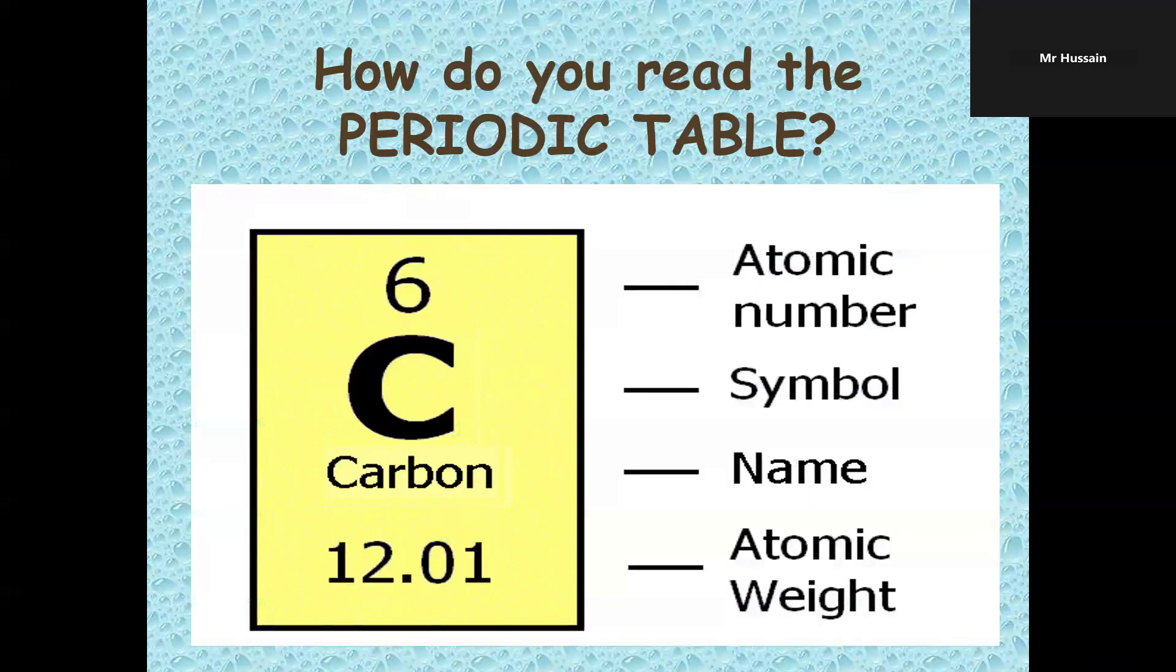How do you read the periodic table? You can see in this diagram there are two numbers, one on the top, one at the bottom with decimal, and one letter and the name of the element.